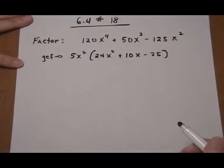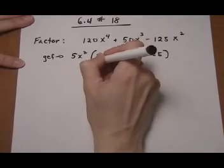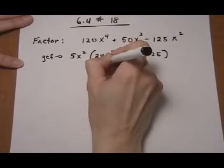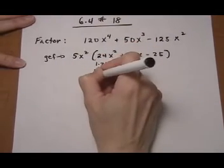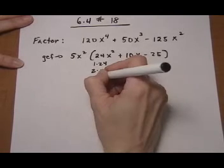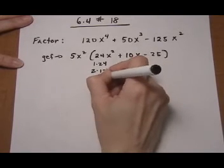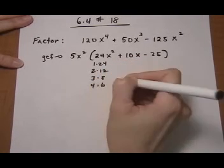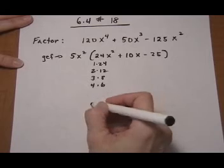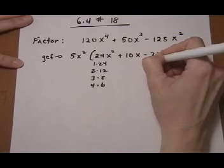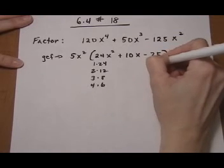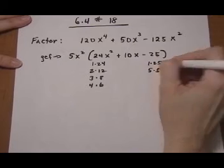Now for the trinomial factoring, if we're going to do trial and error, let's take a look at the different factors of 24 that we might want to use. So we have 1 times 24, 2 times 12, 3 times 8, 4 times 6, and then we get 6 times 4 and we start repeating, so we don't need any more. And for the 25 we have 1 times 25 and 5 times 5.